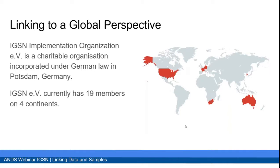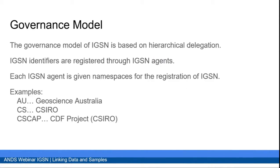Thanks Lesley. I'd like to start with saying: may all your problems be technical — usually technical problems can be overcome. There's also a whole social network behind technical solutions, and this is where the global perspective comes in. The IGSN implementation organization is the body we created to carry this on the global stage. It's a charitable organization incorporated under German law, registered in Potsdam, Germany. At present it has 19 members on four continents. The governance model is a so-called hierarchical delegation model — you can think of it in the way that you assign IP numbers in the internet and the network.